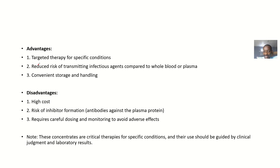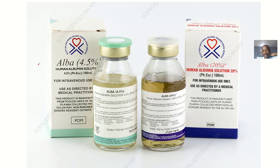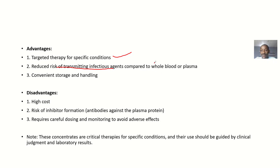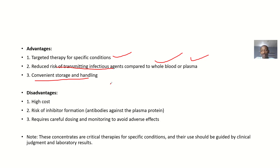The advantages of plasma protein concentrates: you can target them for specific conditions, so instead of administering whole blood you concentrate only the plasma component needed. It also reduces the risk of transmitting infectious agents that could be found in whole blood. Additionally, there is convenience in storage and handling, because preserving plasma concentrates is much easier than preserving whole blood.